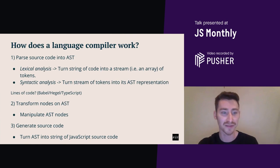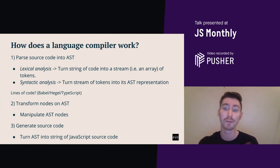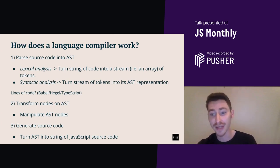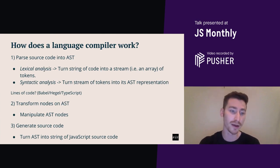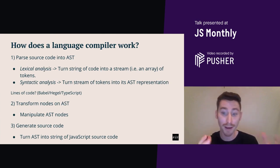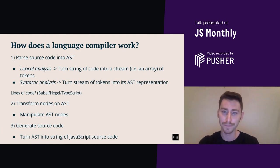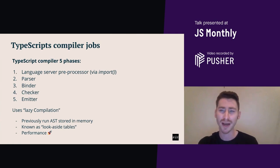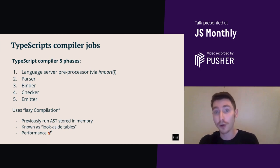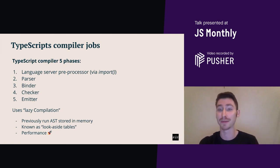Step two is where we transform the nodes in the AST — where we manipulate the AST nodes. Any transformations to apply to the AST are performed here. The final step is to generate source code, where we turn AST into a string of JavaScript source code. The type system has to map any non-JS compliant AST back to native JS. As well as the mentioned steps, type system compilers will usually include an additional step or two after parsing which includes the type-specific work. TypeScript actually has a total of five phases in its compiler, and they are the language server preprocessor, which works via import, the parser, the binder, the checker, and the emitter.